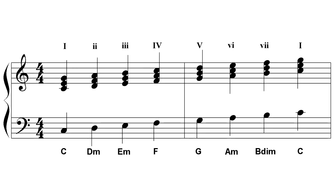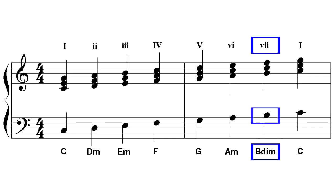Likewise for the B diminished chord mentioned earlier as the 7th chord for the key of C. This can also be considered as a G 7th chord with its 3rd, the B note, in the bass. So it's not a stretch to replace a G chord with a B minor or a B diminished and vice versa, because both chords share most of the same notes.